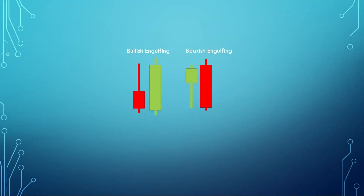A bullish engulfing pattern is made up of two candles. The first candle has to be a small-bodied bearish candle. The second candle has to be a large-bodied bullish candle that closes above the high or the open of the preceding bearish candle. This pattern is found in areas of support in an established downtrend. The bearish engulfing pattern is exactly the opposite and is found in an established uptrend. Both signal a trend reversal — in a bullish scenario it shows buyers are in control, and vice versa in the bearish scenario.